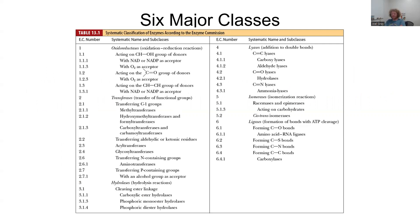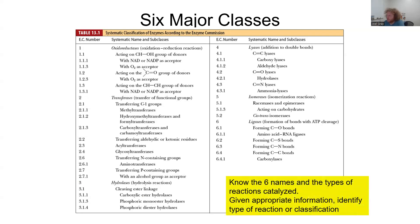Enzymes, based on the reactions that they catalyze — much like in Gen Chem 1 where you classified reactions as decomposition, synthesis, or combustion — are organized into a numbering scheme established by a group called the Enzyme Commission. There are a total of six different major categories: classes 1 through 6.